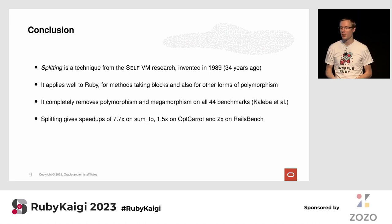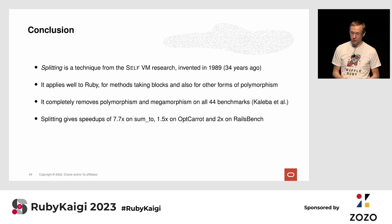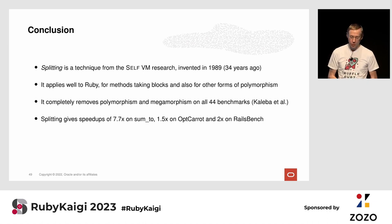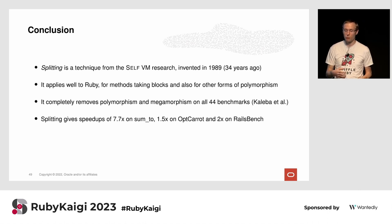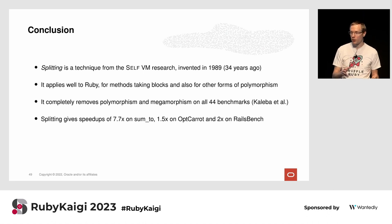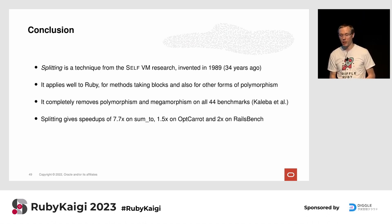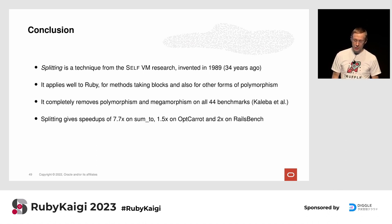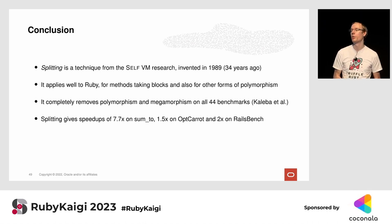In conclusion, splitting is a technique from the Self VM research invented 34 years ago that still applies very well to dynamic languages today. It applies especially well to Ruby because of blocks: if a method takes a block and we want to compile it efficiently, we need to split. We saw it completely removed polymorphism and megamorphism across 44 benchmarks, and gives impressive speedups: 7.7x on sum_to, 2x on Railsbench, and 1.5x on optcarrot.